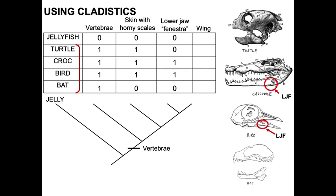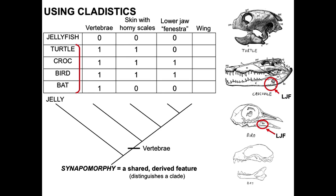We can write jellyfish down here on the most basal line on our tree. Then we can map the character 'vertebrate' onto our tree right here, because everything above where we put this little hash mark has vertebrae. Vertebrate here would be a shared derived feature — a synapomorphy. A synapomorphy is a shared derived feature, and synapomorphies are what we use to distinguish clades.